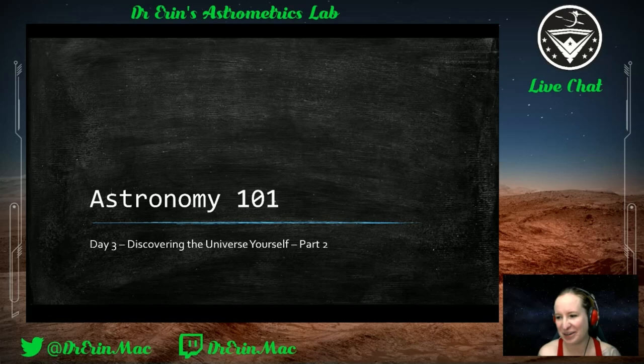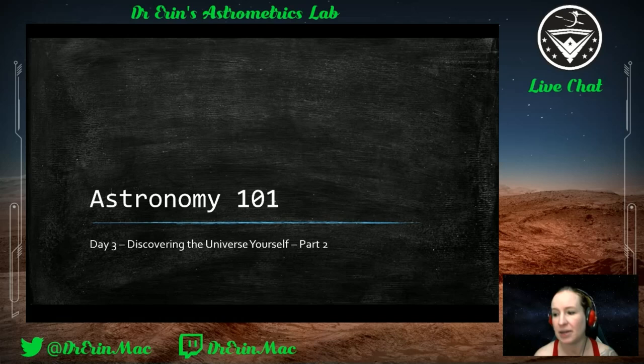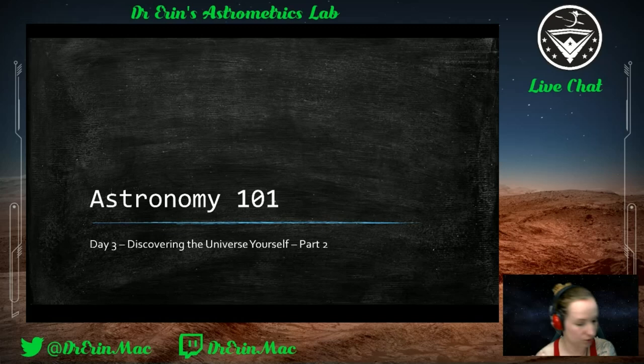Looking east, you'll be able to see this big formation — it's not a constellation but it's like the three brightest stars in three different constellations: Altair, Deneb, and Vega. You can see them in a whole triangle, and as we'll discuss today, you'll start to learn why that changes throughout the year as the earth goes around the sun.